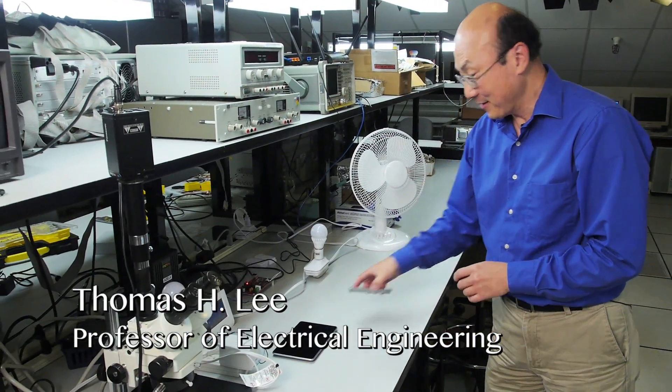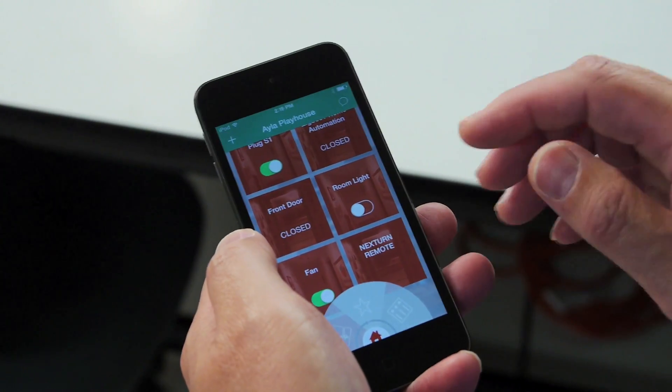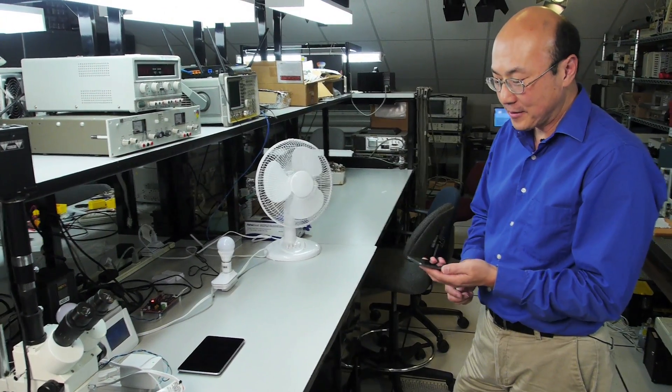All right, so the idea in the Internet of Things, or the Internet of Everything actually, since humans will be involved as well as objects, one part of the vision is that your smartphone or other device will act as kind of the remote control and the central hub of your life.